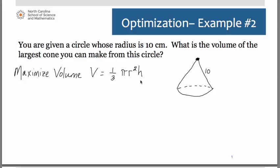The secondary equation can come from a Pythagorean theorem that is written from the creation of a right triangle inside of this cone. The hypotenuse of that right triangle is 10.